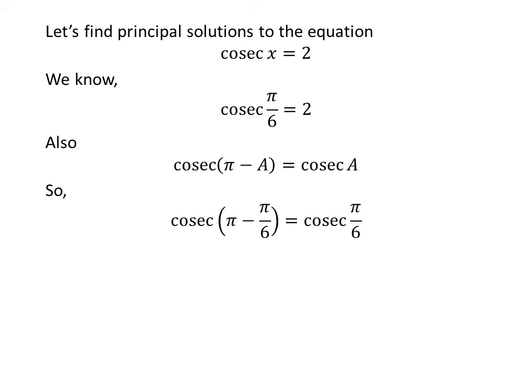Application of the above identity implies that cosecant of pi minus pi upon 6 is equal to 2. The above statement implies cosecant of 5 times pi upon 6 is equal to 2.